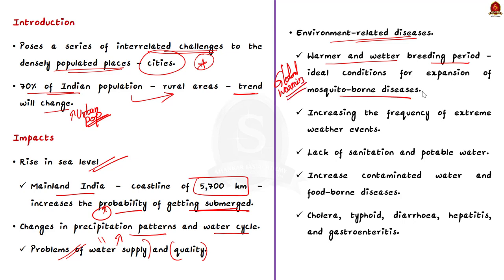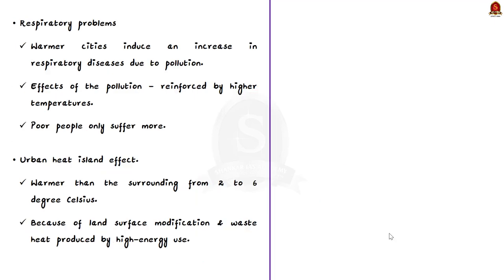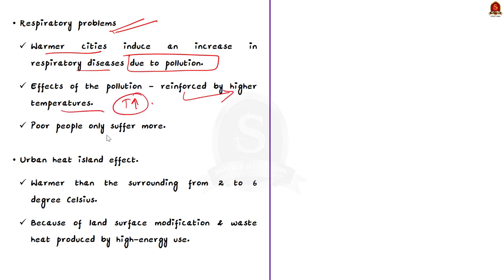Fourthly, climate change is increasing the frequency of extreme weather events, resulting in lack of sanitation and potable water, which in turn increases contaminated water and food-borne diseases like cholera, typhoid, diarrhea, hepatitis and gastroenteritis. Warmer cities will also see an increase in respiratory diseases due to pollution, as the effects of pollutants are reinforced by higher temperatures. The poor suffer more because they already live in unhygienic places such as slums and have lesser possibilities to adapt.